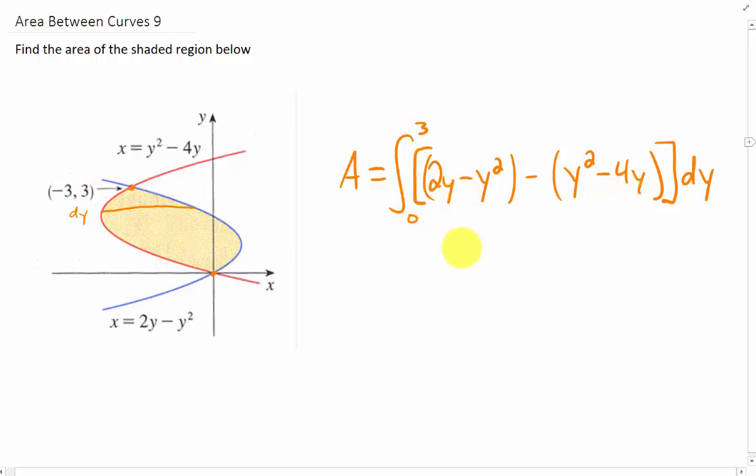Simplifying this, integrating, and plugging in our limits will give us the result. If we combine like terms, we get negative 2y² plus 6y, which gives us negative 2/3 y³ plus 3y². We're going to evaluate that from 0 to 3.